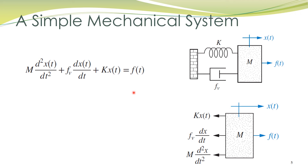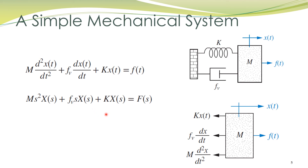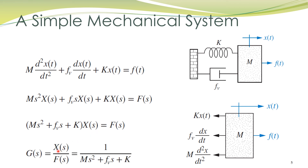We can take the Laplace transform of this equation, assuming all initial conditions to be zero. We know that the Laplace transform of a derivative of a variable equals the Laplace transform of that variable multiplied by s. If we are interested in the transfer function with displacement X(s) as output and force F(s) as input, we can rearrange to get: X(s)/F(s) = 1 / (ms² + fv·s + k), which is the transfer function of this mechanical system.